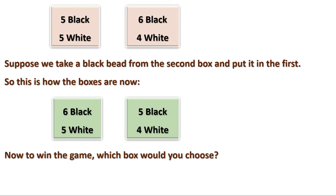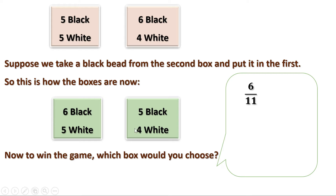But why didn't we consider the total in the previous examples? In all those examples the total was the same, that is why we didn't bother about the total. If the totals are different, we have to consider them. We can say the probability of getting a black bead from the first box is 6 by 11, and the probability of getting a black bead from the second box is 5 by 9.